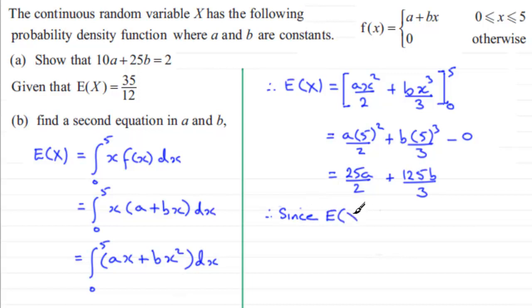I'll just write here first of all, since E(X) equals 35 over 12, we therefore have 25a over 2 plus 125b divided by 3 equals 35 over 12. Now what I notice here is each of these terms is divisible by 5. So let's just go through and divide by 5.